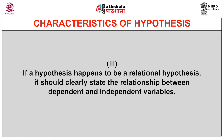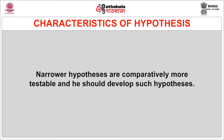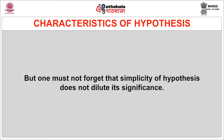Third, if a hypothesis happens to be a relational hypothesis, it should clearly state the relationship between the dependent and the independent variables. Fourth, hypothesis should be specific and must be limited in scope. Narrower the hypotheses are, comparatively they become more testable, and the researcher should develop such hypotheses only. Fifth, hypothesis should be stated in the most simple terms as far as possible so that it is easily understood by all, but one must not forget that simplicity of hypothesis does not dilute its significance.